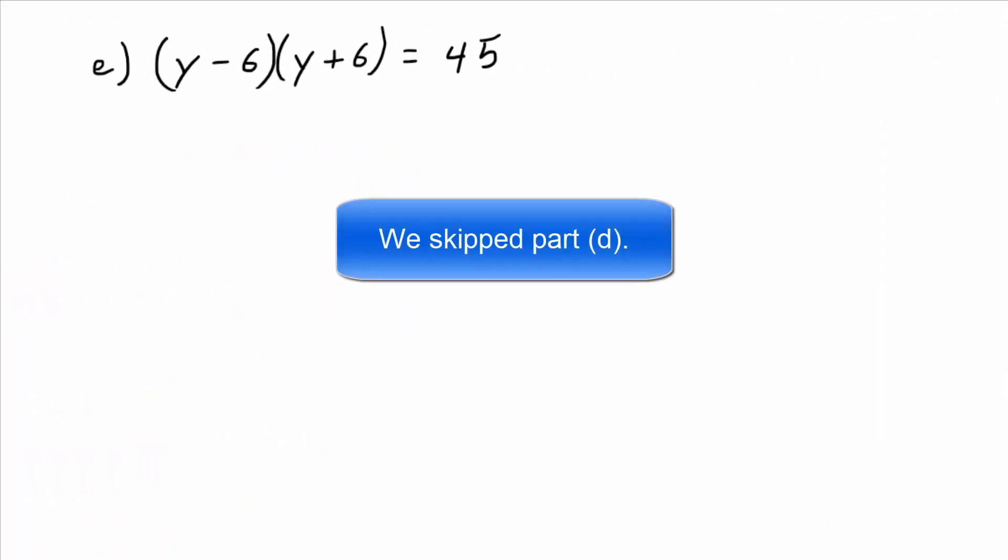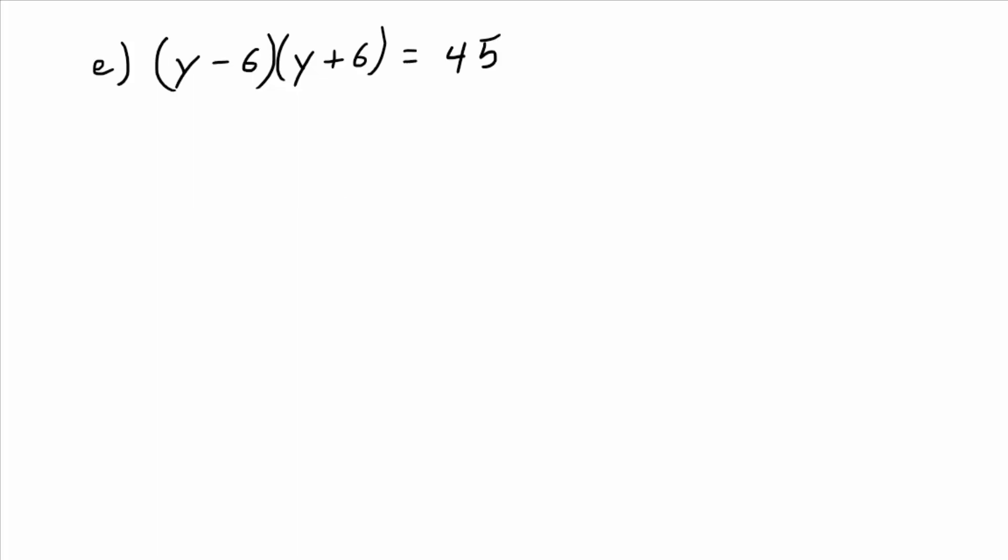Part E: (y minus 6) times (y plus 6) equals 45. You look at this and at first you think it's good news — we've got our factorization, right? But wait, why is it not good news? Because we don't have a 45 product rule. We have a zero product rule. So it doesn't work to set both factors equal to 45 — that would be nonsense.